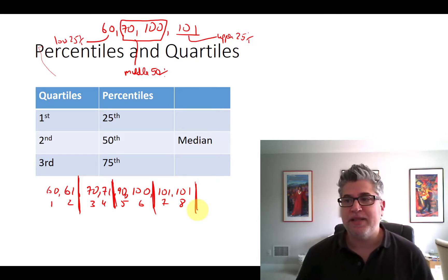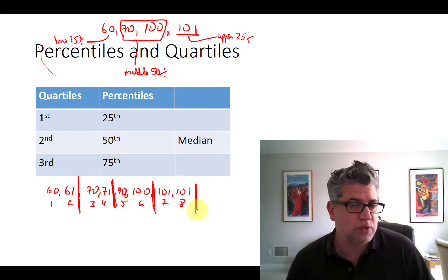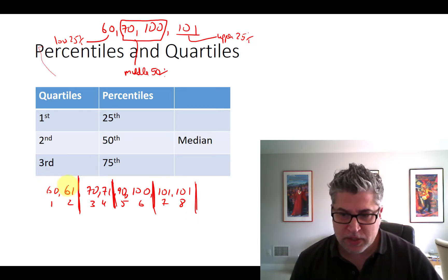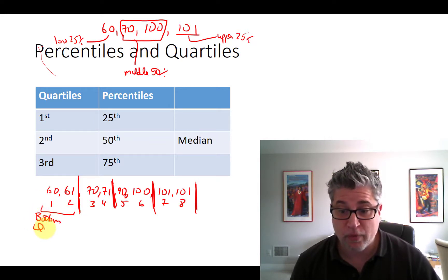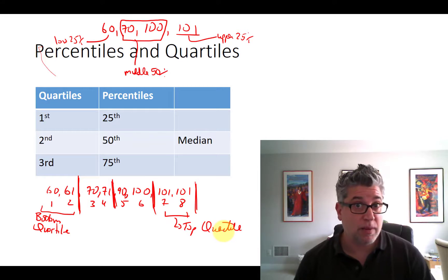When I split things up like that into fourths, I'm splitting it up into quartiles, quarters, right? And so these two students would represent the bottom quartile or the bottom fourth. These two students would represent the top quartile or the top quarter, top fourth.